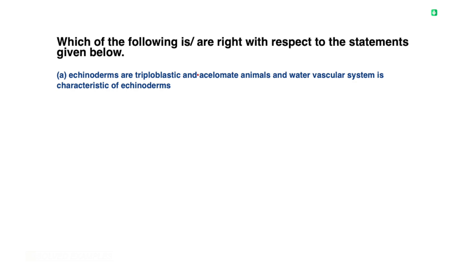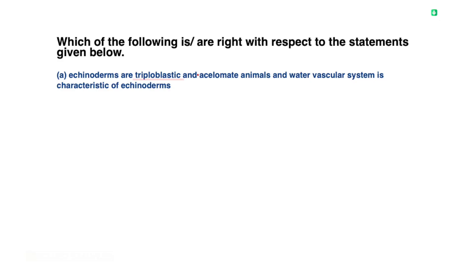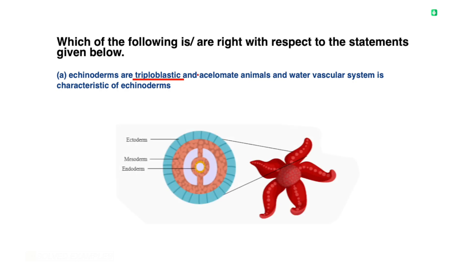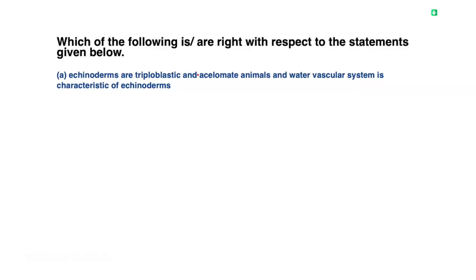Statement 1: Echinoderms are triploblastic and acoelomate animals, and the water vascular system is a characteristic of Echinoderms. Analyzing this statement — the first statement is wrong.